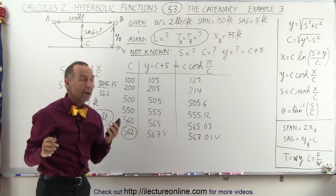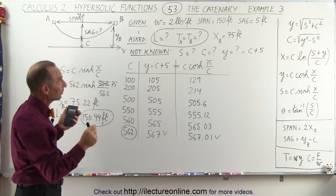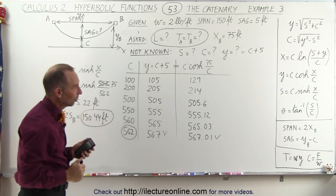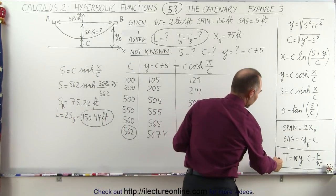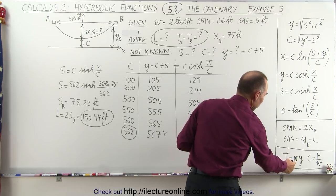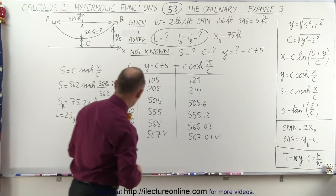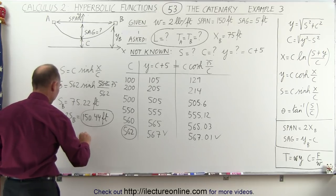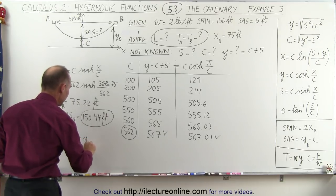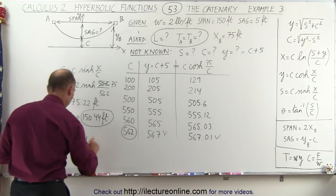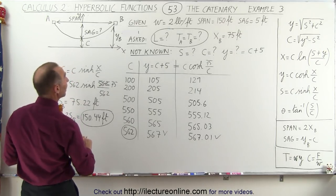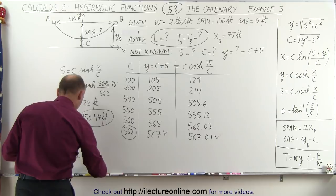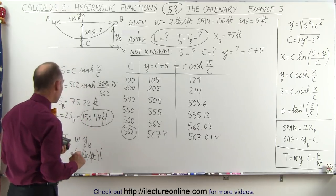Now one more thing. How much tension will be on the cable at the supports? So now we come over here, and we're told that the tension is equal to the weight per unit length times y. So the tension is equal to the weight per unit length times y_b, of course, because it's at the full length of that cable. And so that would be equal to, we have two pounds per foot, multiply that times y_b.